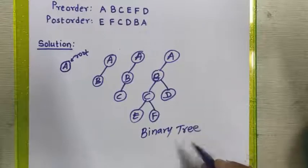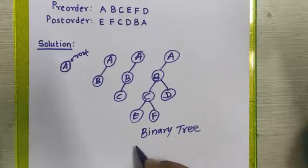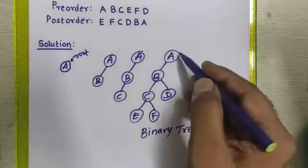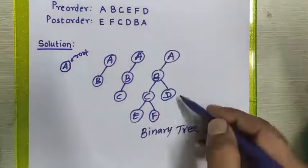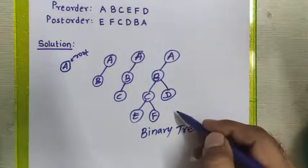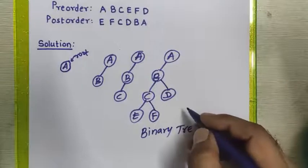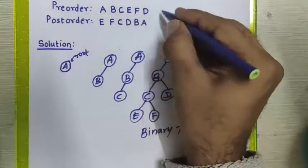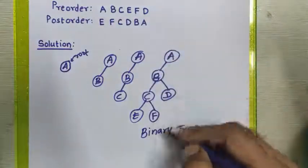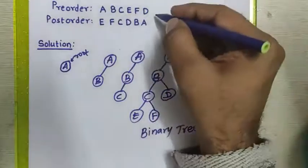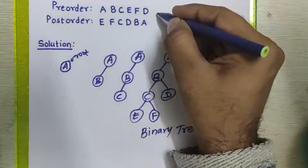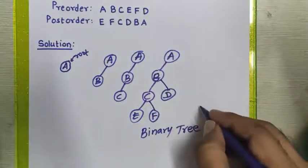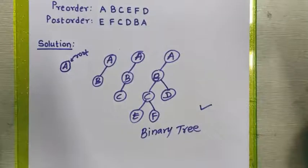To verify whether the binary tree we designed is correct, we traverse it again in pre-order and post-order. If the resulting sequences match the original input sequences, we can confirm the tree is correct; otherwise it is wrong.